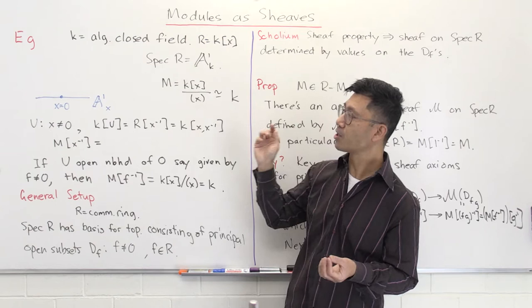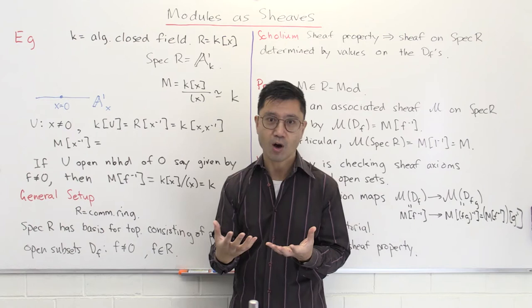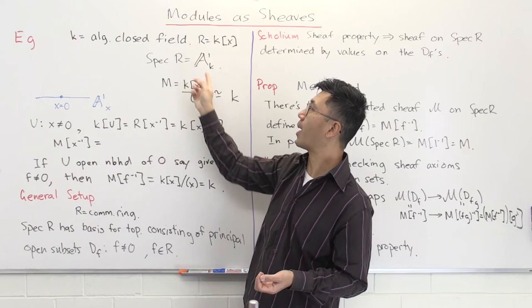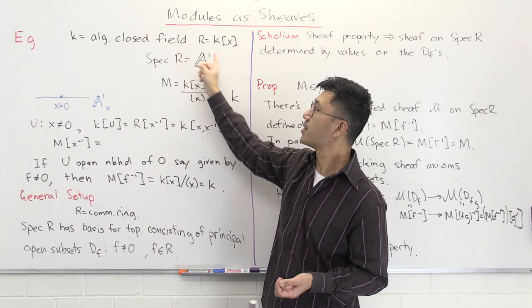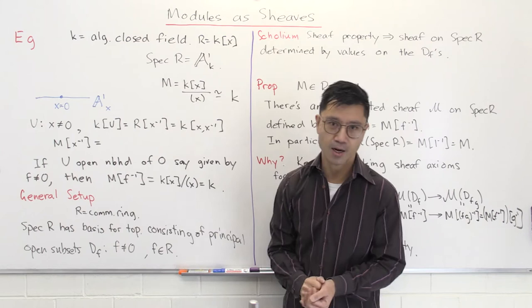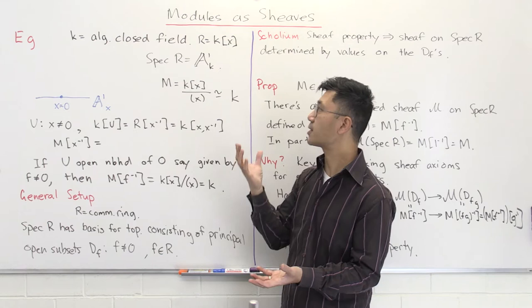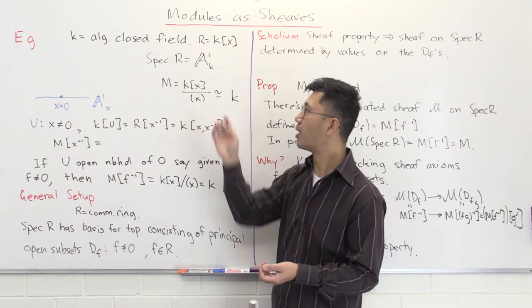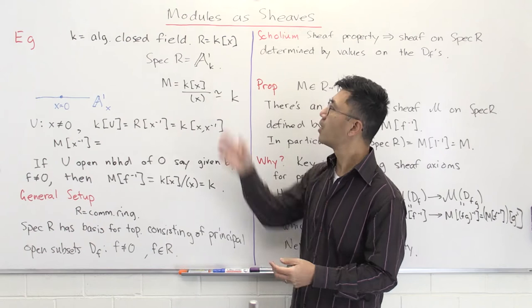I want to begin with a little example which will give you a flavour of how this is true. We'll work in a very simple setting where we look at the affine line over an algebraically closed field k. We can associate algebraically to that its coordinate ring, which in this case is just the polynomial ring k[x] with one variable x. Starting with this commutative ring, we can talk more generally about schemes, using the notation Spec R. But if you like, you can just think of this as the variety — it's just an affine line, just a copy of k.